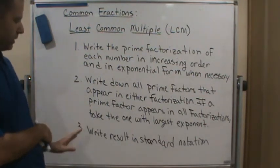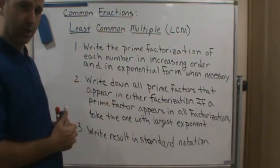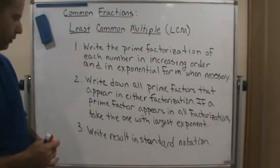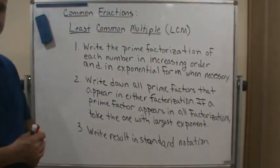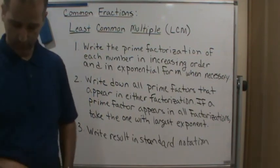Then in step three, you're going to take the list of prime factors that you wrote down from step two and multiply them out. Write it in standard form, and that is your least common multiple. That's how you do it. Let's do some examples now.